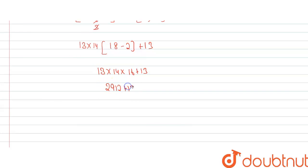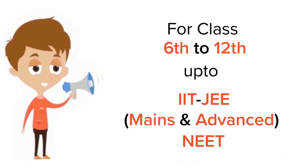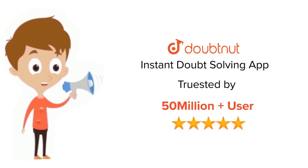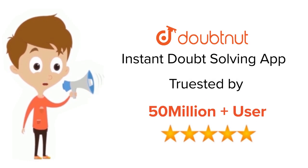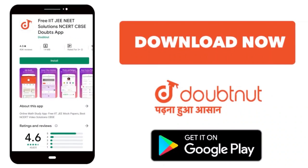13 × 14 × 16 = 2912, and 2912 + 13 = 2925. So the answer is 2925. Thanks for watching — for class 6 to 12, IIT JEE, and NEET level, trusted by more than 5 crore students, download DoubtNut today.